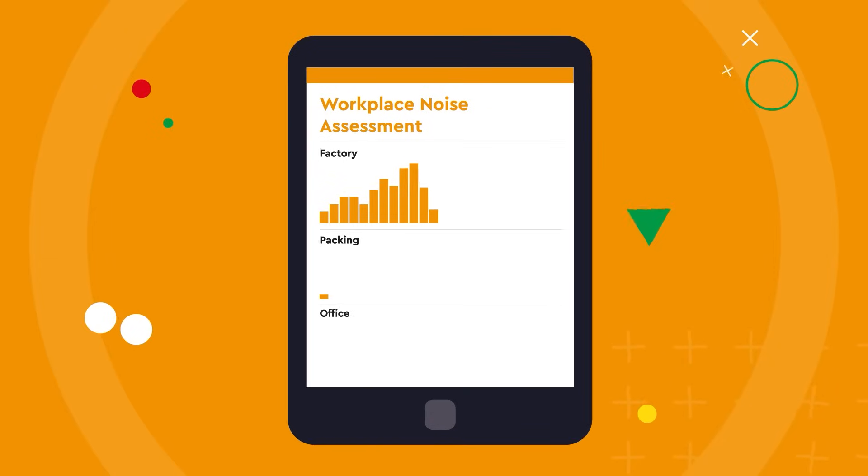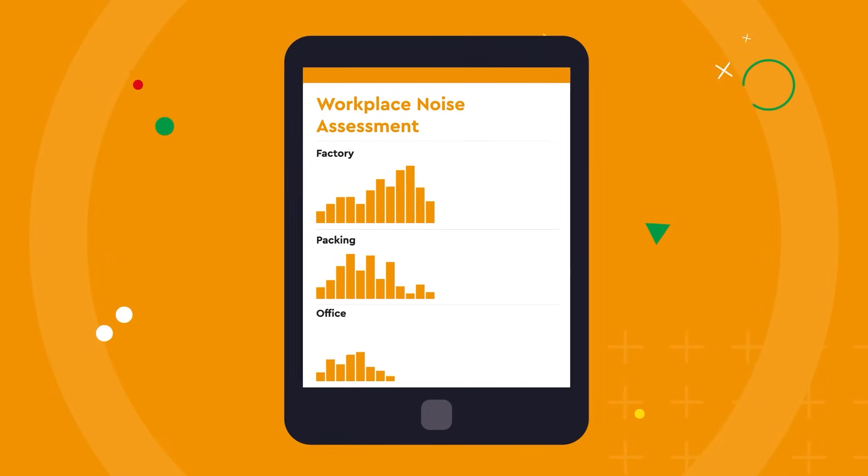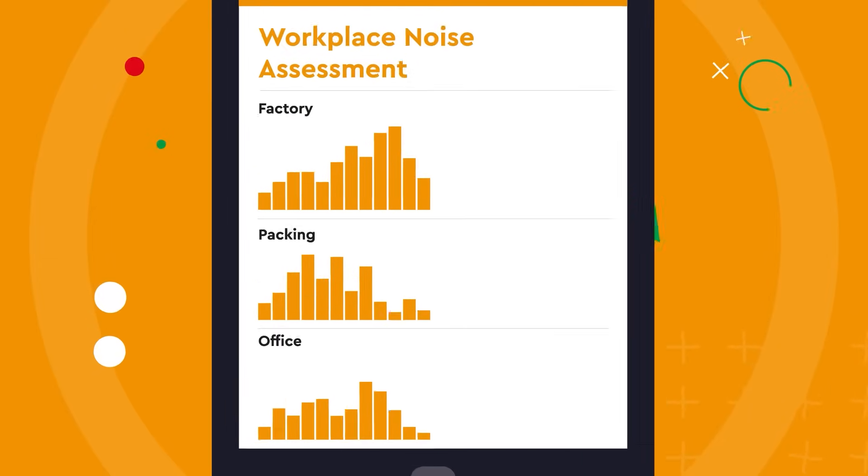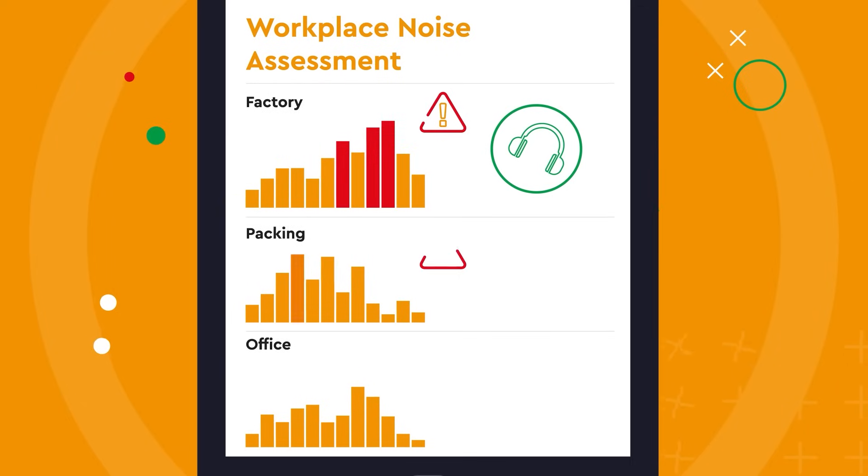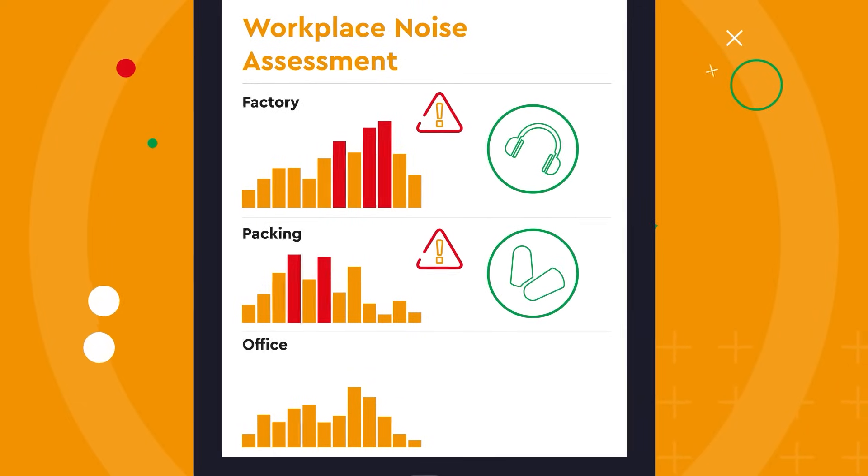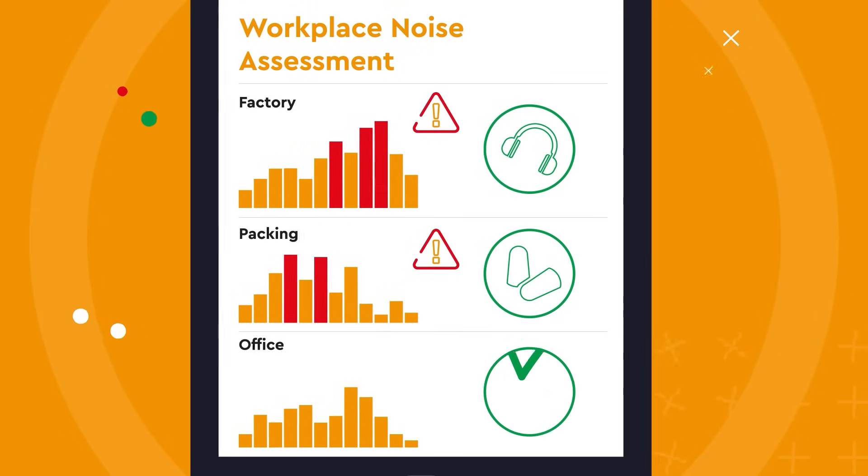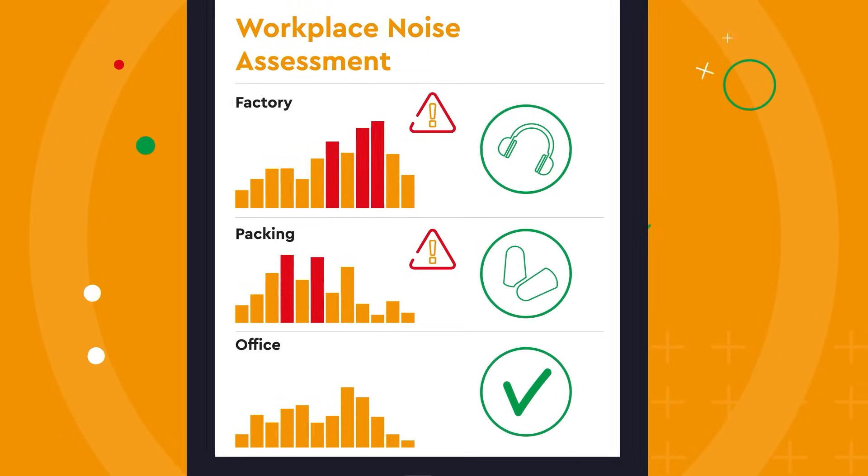Using the noise level data collected, each work area can then be classified as either requiring hearing protection to be worn, or hearing protection provided and worn voluntarily, or no hearing protection controls are needed at all.